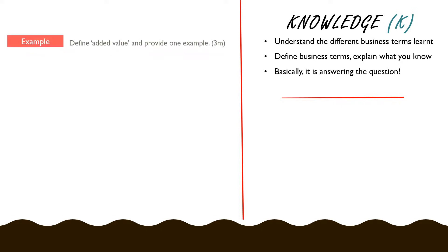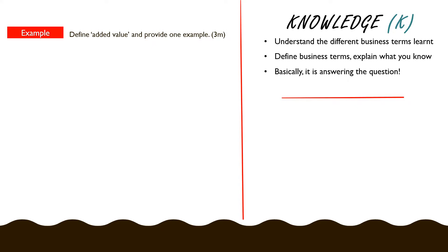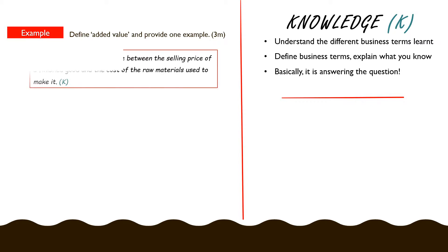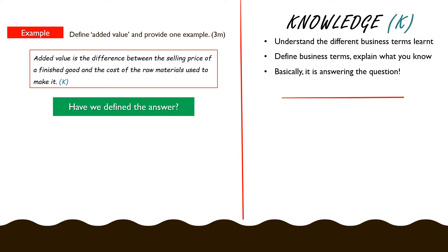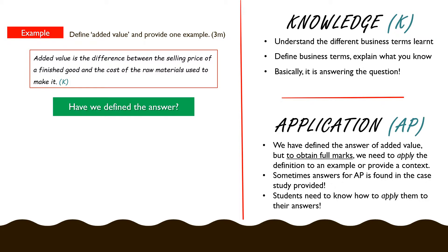Let's look at an example question: 'Define added value and provide one example.' This is worth three marks. To define added value, you would use a definition similar to this: it's the difference between the selling price of a finished good and the cost of the raw materials used to make it. So you would get marks for the knowledge portion. But have you actually answered the full question, or would you be able to gain all three marks? What could be lacking is the application, or the example, that was requested in the question.